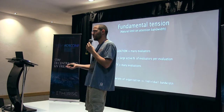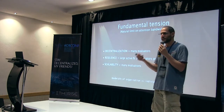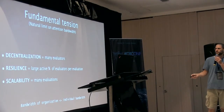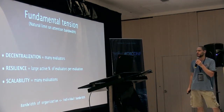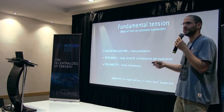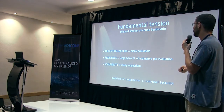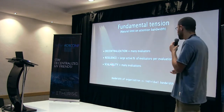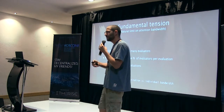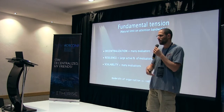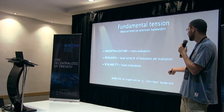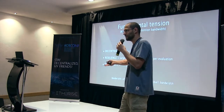I'll show you this tension and propose means to work with it — means that are already familiar under different names in blockchain. The tension is essentially the natural limit on attention bandwidth. When we say decentralization, we mean many evaluators. When we say resilience, we mean a large active percentage of evaluators per evaluation. Scalability means we have many evaluations. Essentially, everyone attends everything — but if everyone attends everything, we get the bandwidth of only an individual for a large organization. This is clearly not scalable. In fact it's even worse, because each decision will be as slow as the slowest participant.